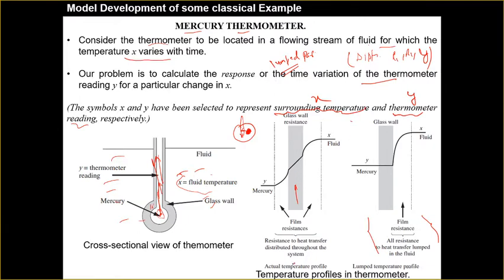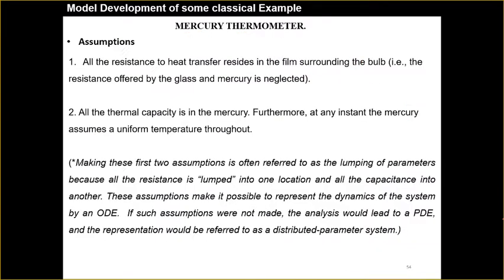The actual temperature profile may vary, but in the ideal case we assume the temperature is uniform. The assumptions are: all resistance to heat transfer resides in the film surrounding the bulb only — the resistance offered by the glass and mercury is neglected. All thermal capacity is in the mercury only.